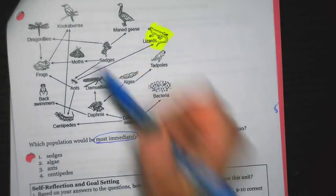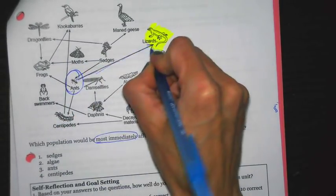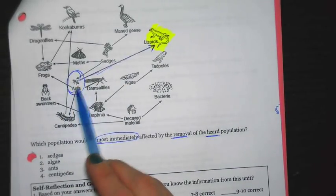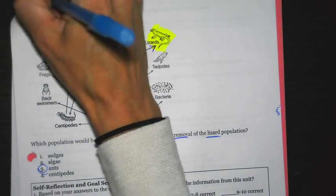Most immediately affected means which one is it directly connected to in the food chain. So I follow that arrowhead back and what I find out is that the ant is the one that's most closely connected to it. And because of that, most immediately affected, it's going to be three ants.